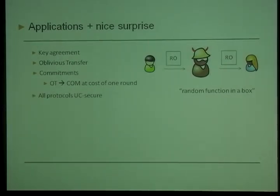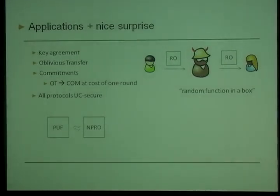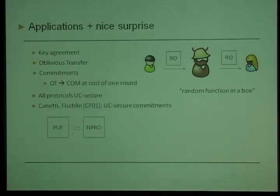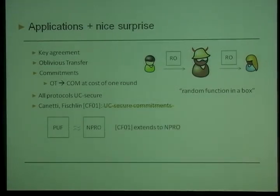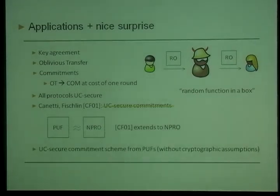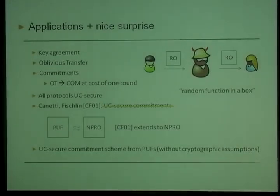For those familiar with the Universal Composition Framework: you can think of PUFs as non-programmable random oracles. There is something very surprising about building a UC-secure commitment scheme in this framework, because Canetti and Fischlin showed in 2001 that you cannot have UC-secure commitments in the plain model, and that proof extends to the non-programmable random oracle model. The fact that we could do this from PUFs was a bit surprising — it shows PUFs are more powerful than non-programmable random oracles.